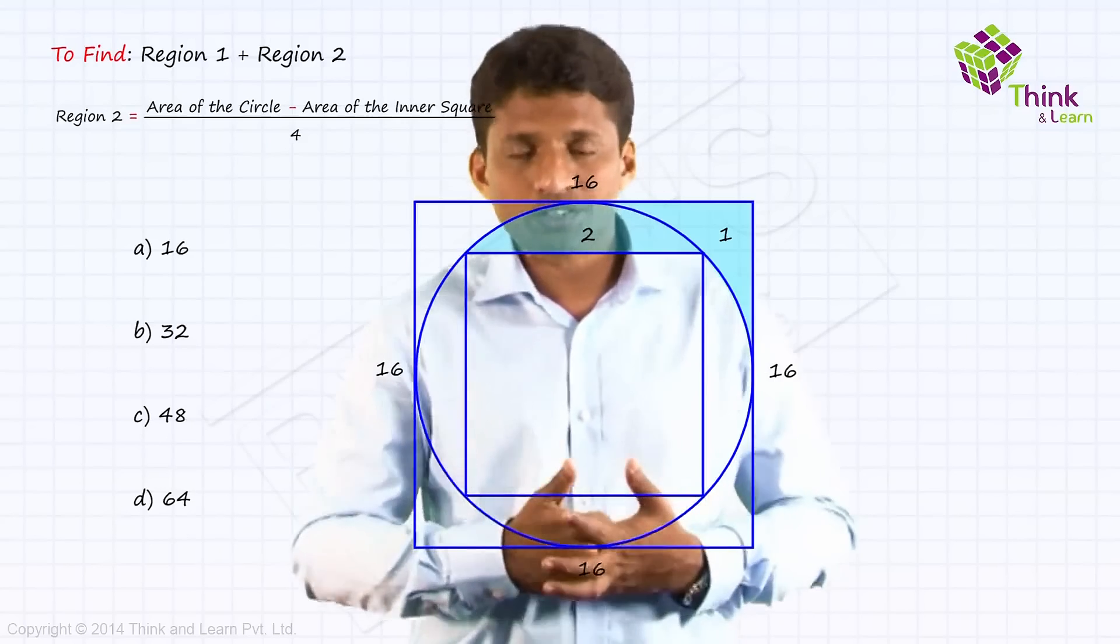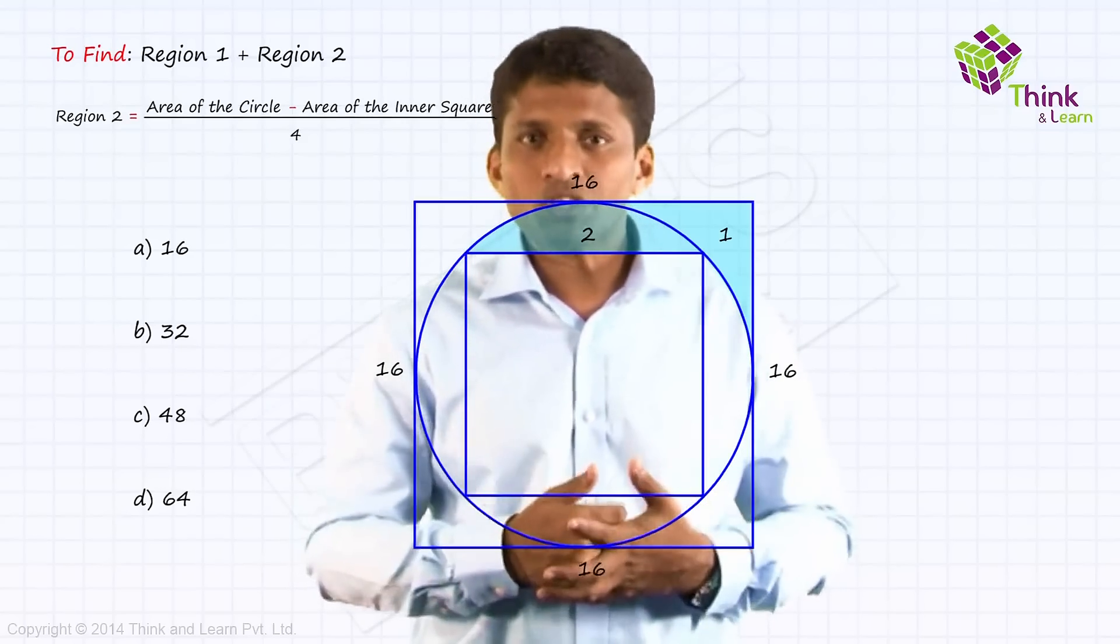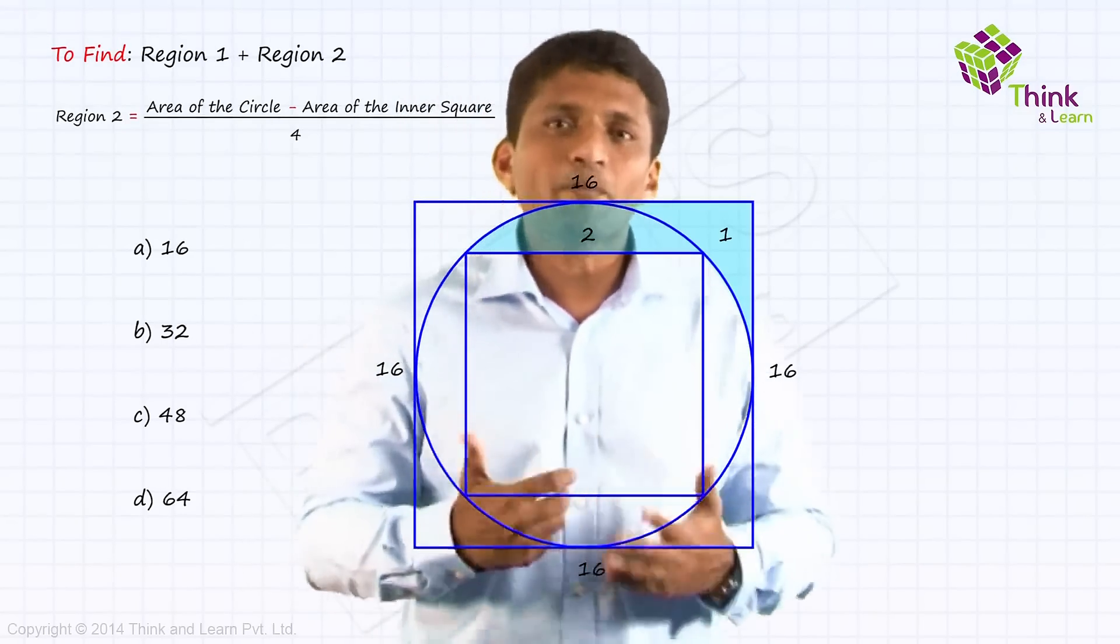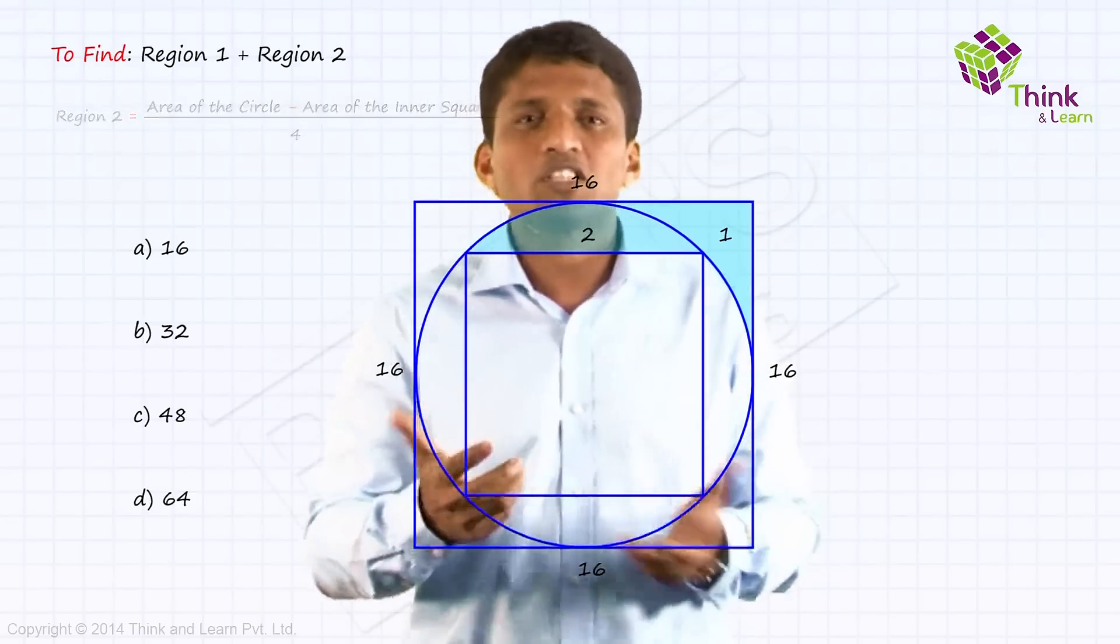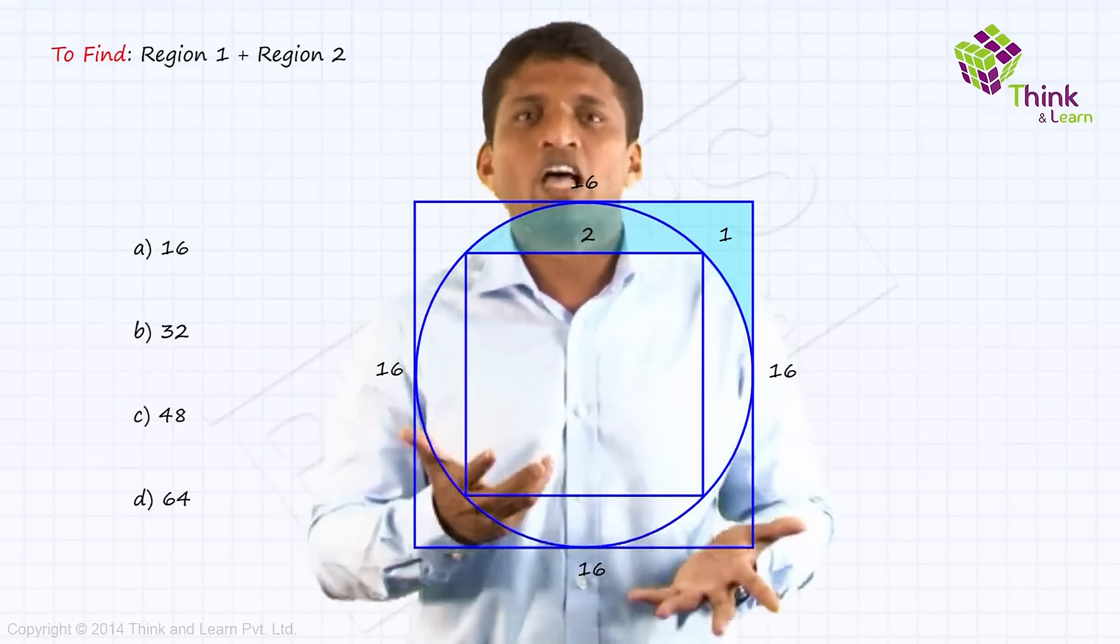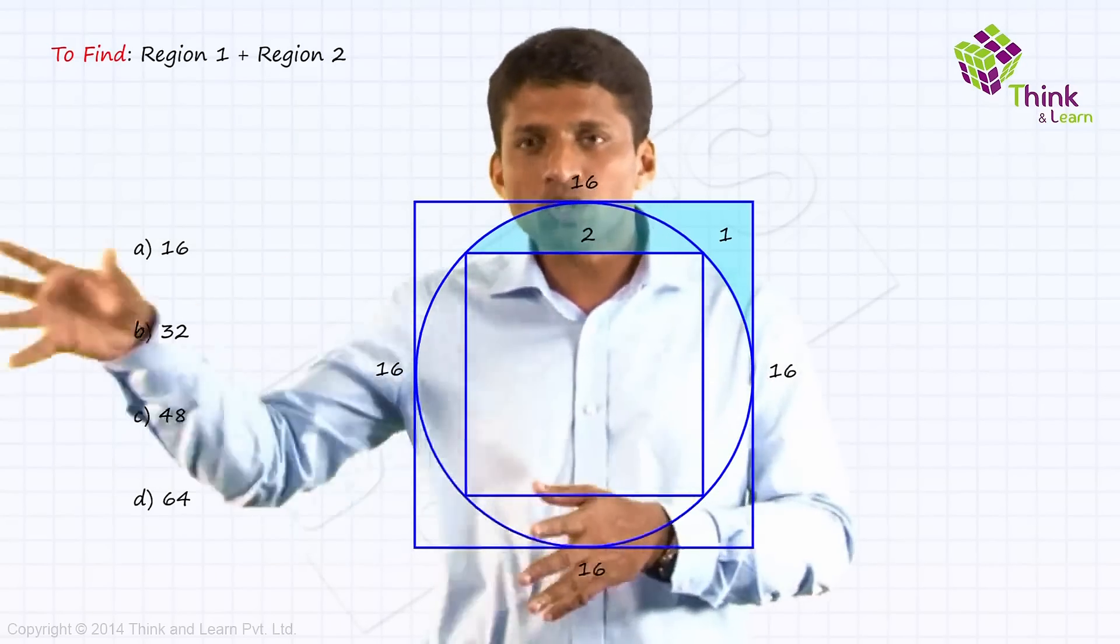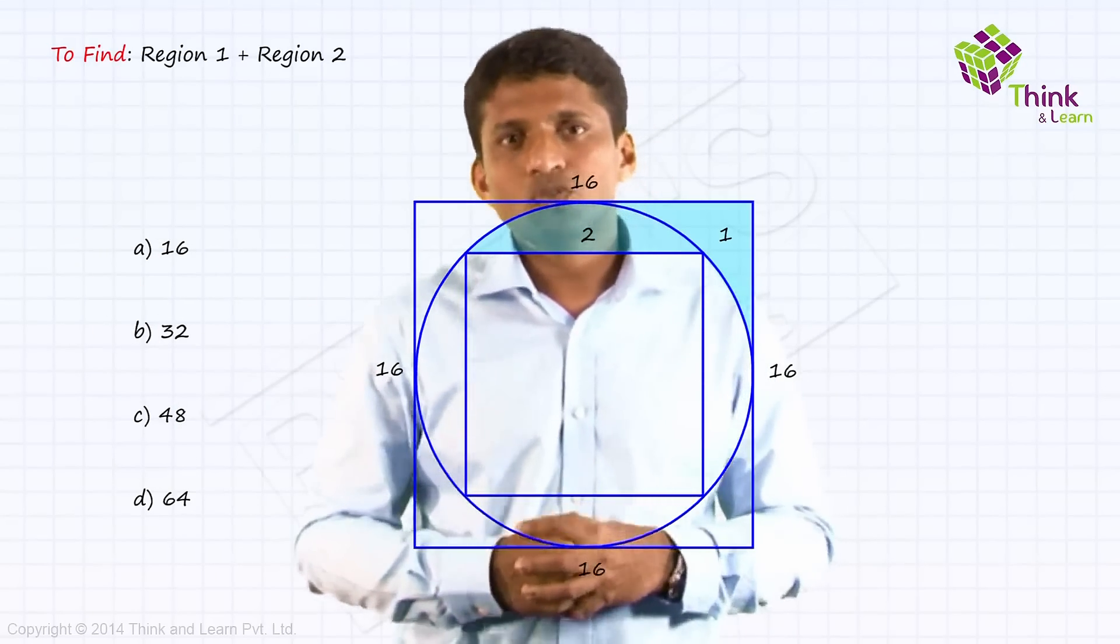Now when you are doing this, π is involved in calculation because circle is involved. Options are without π. That's why you will end up taking 1.5, 2, 2.5, 3 minutes depending on your calculation speed. Whether you are fast, super fast, average, that will decide how much time you will take to convert this into the answer options.